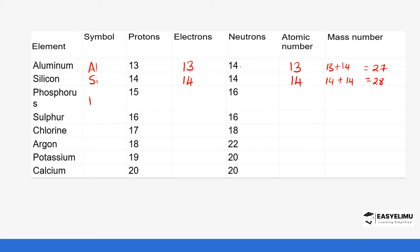Phosphorus has the symbol P. It has 15 protons, which is the same as the atomic number, and in a neutral atom the number of electrons is also 15. To calculate the mass number we take the number of neutrons, which is 16, plus the number of protons, which is 15, giving us 31.